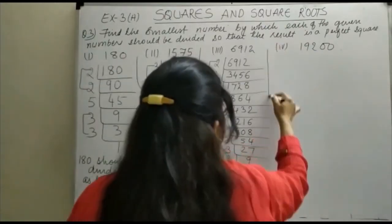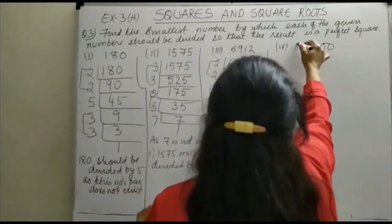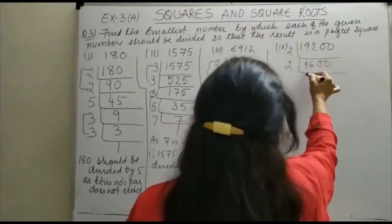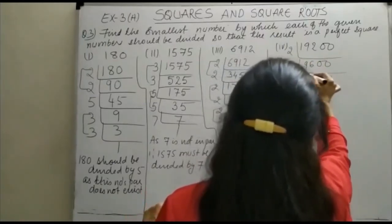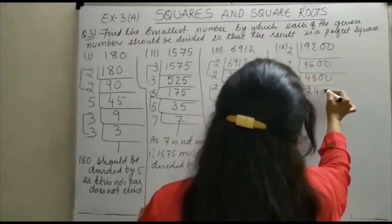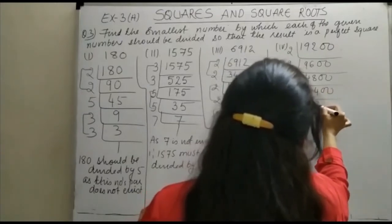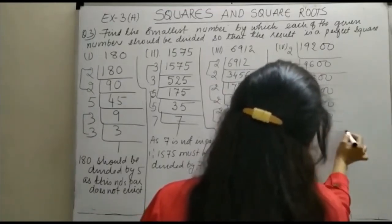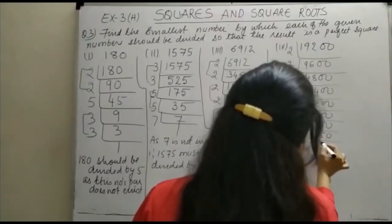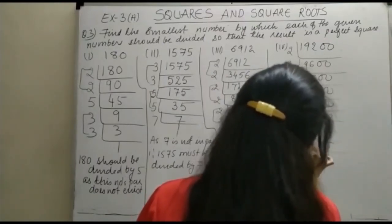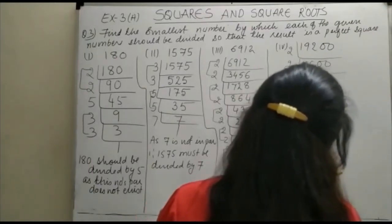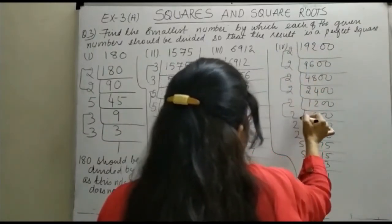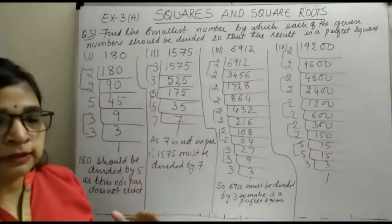Next is 19200. This can be divided by 2. We do the prime factorization: repeatedly dividing by 2 gives us 9600, 4800, 2400, 1200, 600, 300, 150, 75. Then 75 is divided by 5 to give 15, then by 5 to give 3, and then 3 divides 3 to give 1. When we check the pairing of all prime factors, 3 is found to be unpaired.